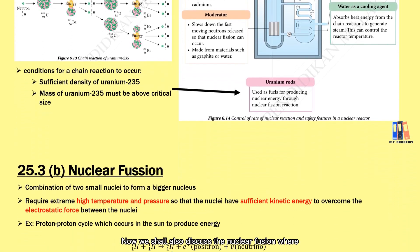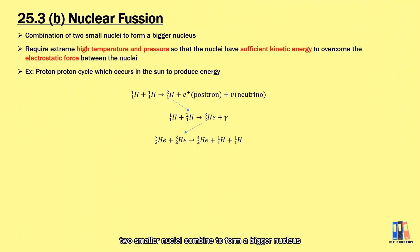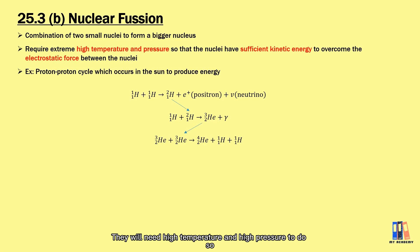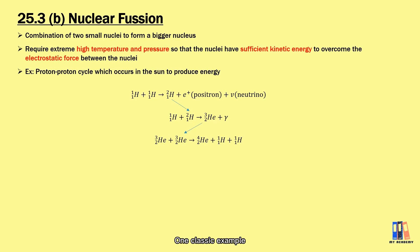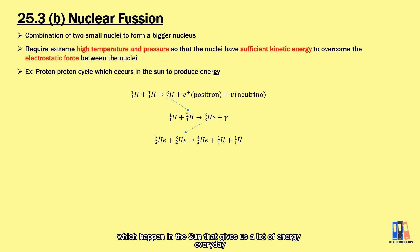Nuclear fusion is where two smaller nuclei combine to form a bigger nucleus. This requires high temperature and high pressure because the nuclei need high energy to overcome the electrostatic force when combining. One classic example is the proton-proton cycle, which occurs in the sun and gives us a great deal of energy every day.